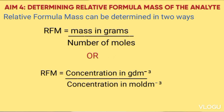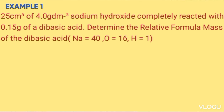Example one: 25 cm³ of 4.0 grams per dm³ sodium hydroxide completely reacted with 0.15 grams of a dibasic acid. Determine the relative formula mass of the dibasic acid. To answer this question, the first step is always to identify which is the standard solution and which is the analyte. The analyte is the dibasic acid, while sodium hydroxide is the standard solution.